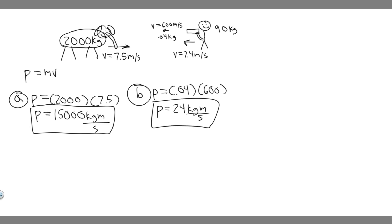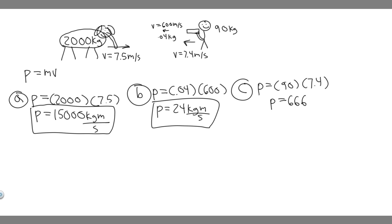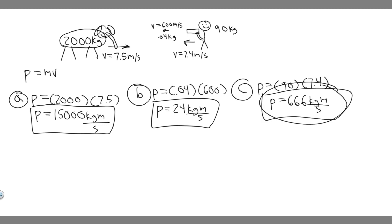For C, we're solving for the momentum of the hunter. It's equal to the mass of the hunter, which is 90 kg, multiplied by his velocity of 7.4 meters per second. So 90 times 7.4 equals 666. The momentum of the hunter is 666 kilogram meters per second. So to summarize: the elephant's momentum was 15,000, the dart's was 24, and the hunter's is 666 kg·m/s.